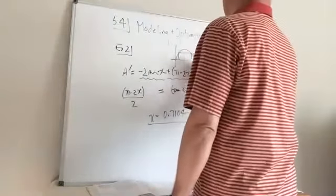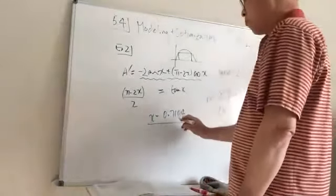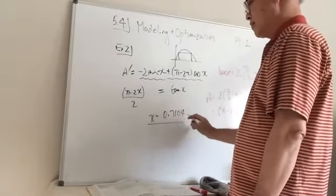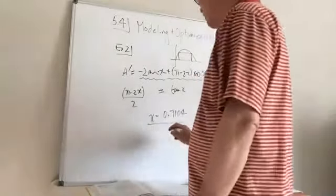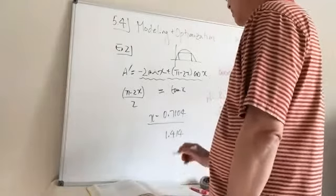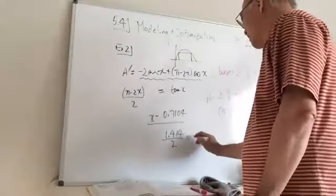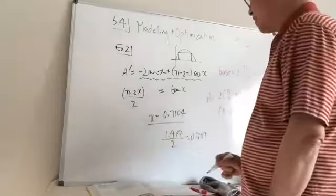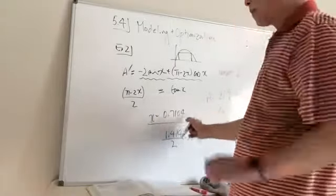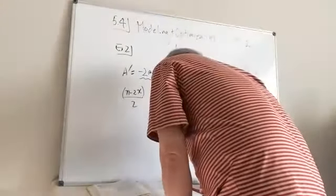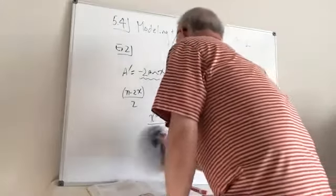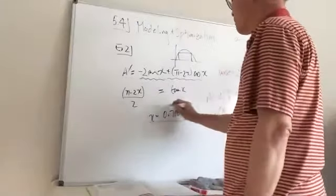At x ≈ 0.7104, that's where the maximum occurs. Does anybody recognize that number? It's close to √2/2, which is about 0.707, but not exactly. So x ≈ 0.7104 is your answer for where the maximum area rectangle is inscribed under the sine curve.